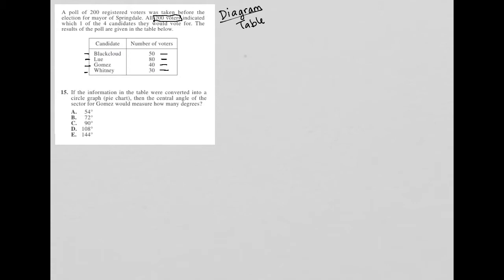So question 15 says, if the information in the table were converted into a circle graph or pie chart, then the central angle of the sector for Gomez would measure how many degrees.